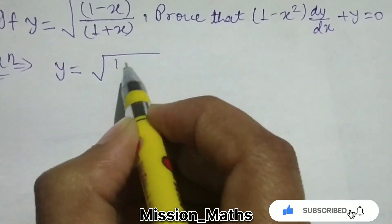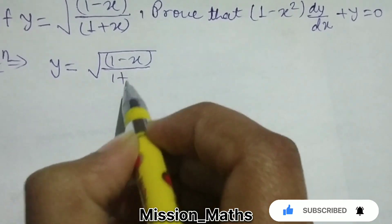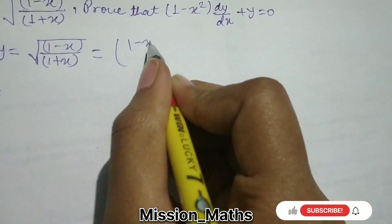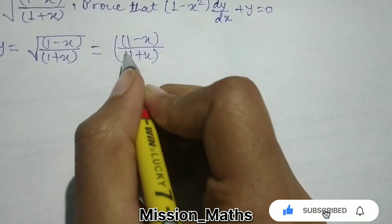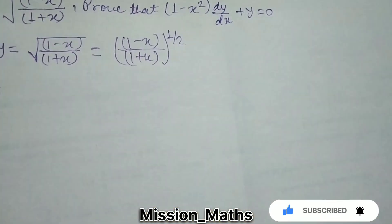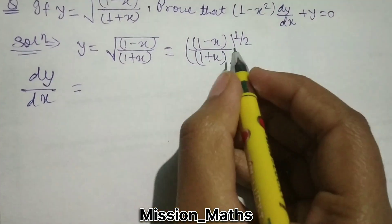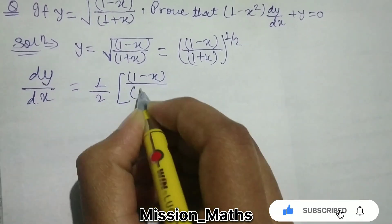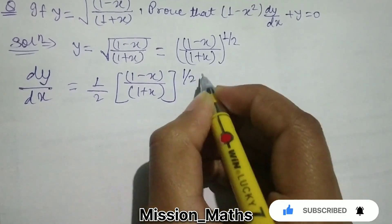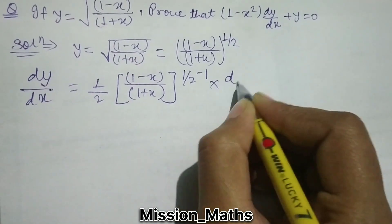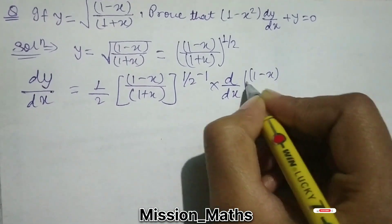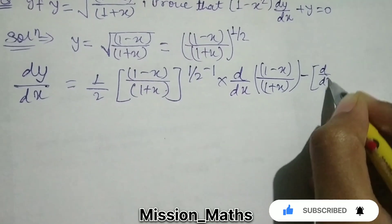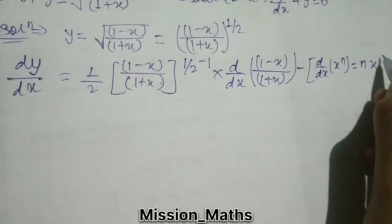y is equal to root under (1 minus x) upon (1 plus x). We can also write it as (1 minus x) upon (1 plus x) raised to 1 upon 2, because of the root. Differentiation of y with respect to x will be 1 upon 2 times (1 minus x) upon (1 plus x) raised to (1/2 minus 1), using the formula: differentiation of x raised to n is equal to n times x raised to n minus 1.